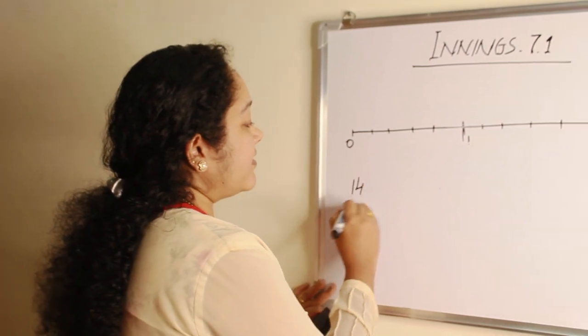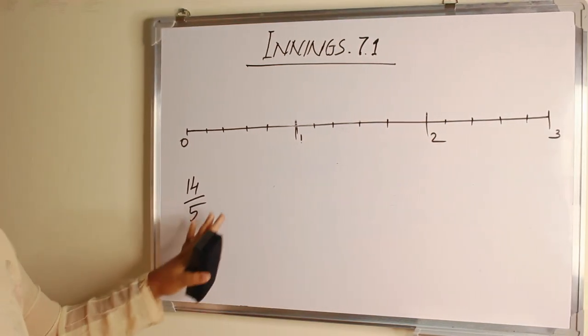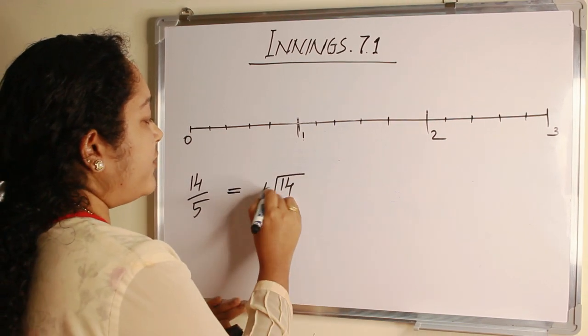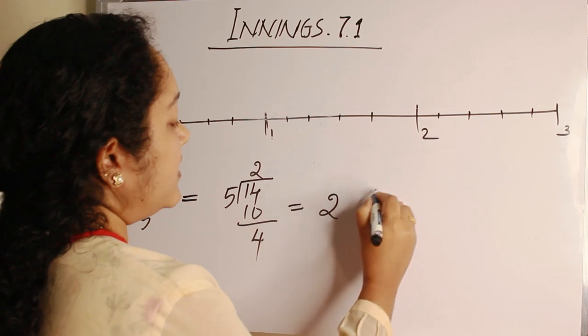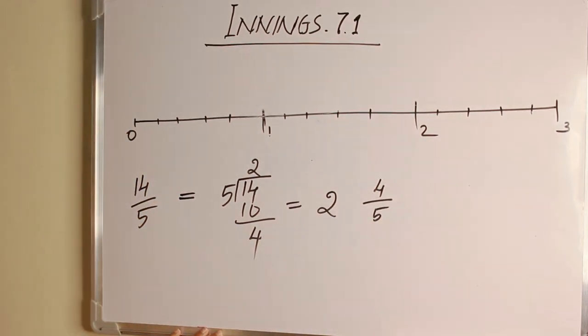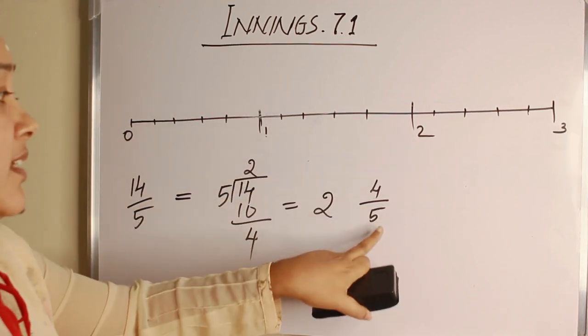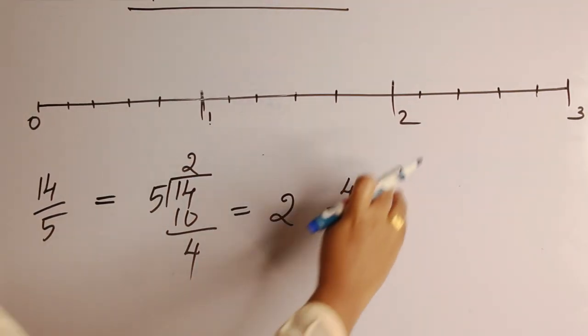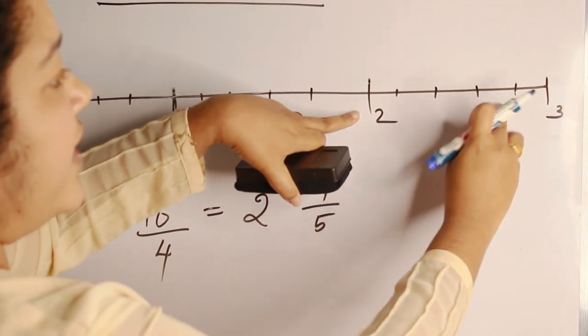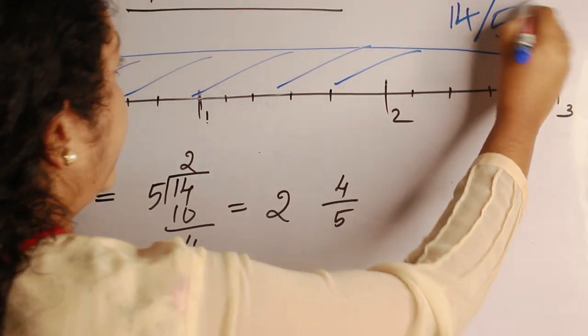Next question is 14 by 5. This is an improper fraction. So we convert it to mixed fraction. 14 by 5. 5, 2 fives are 10. 4 is remainder. We get 2 and 4 by 5. So 2 is the whole part and 5 is the denominator so 1 unit is divided into 5 equal parts. Let's start count from 2 units 1, 2, 3 and 4. Here it is, 14 by 5.